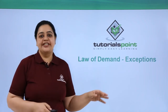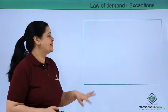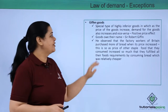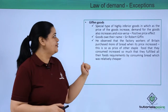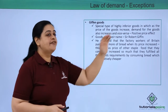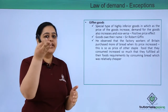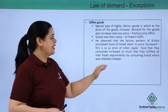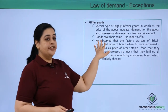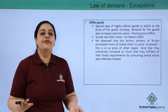Now we understand what is the law of demand and what are the assumptions. Let's understand what are the exceptions. The law of demand will not hold true when it comes to Giffen goods, because these are a special type of highly inferior goods in which when the price of the goods increases, the demand for goods also increases, and vice versa. This is known as the positive price effect.